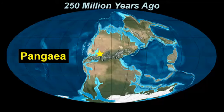We can begin 250 million years ago when all the world's continents, all the world's regions were essentially combined to form one supercontinent, Pangaea. What we're looking at is the globe 250 million years ago.